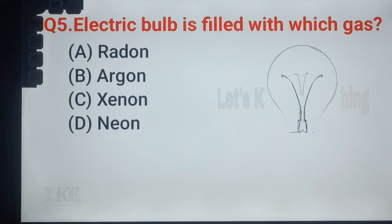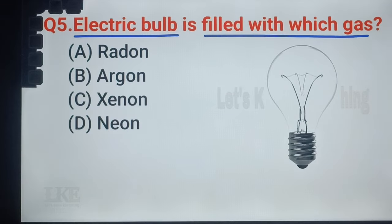Question number 5: electric bulb is filled with which gas? A. Radon, B. Argon, C. Xenon, D. Neon. Right answer: option B, Argon.